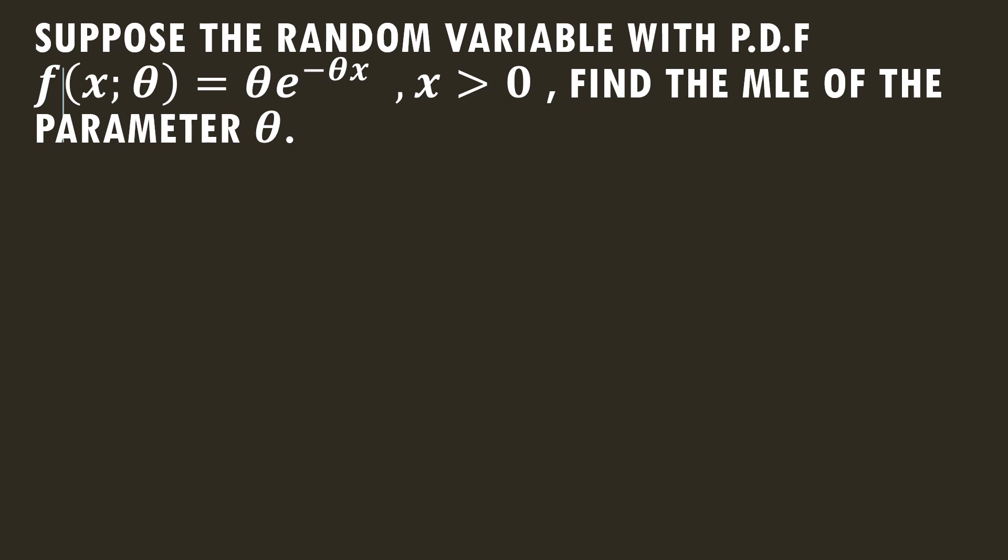Let's see how we can find the MLE of the exponential distribution parameter. Suppose the random variable with PDF f(x; θ) = θe^(-θx), with x greater than 0, we have to find the MLE, that is the maximum likelihood estimator of the parameter θ.